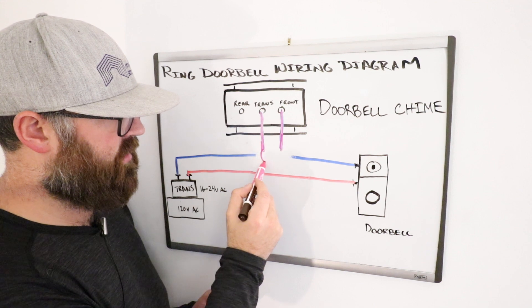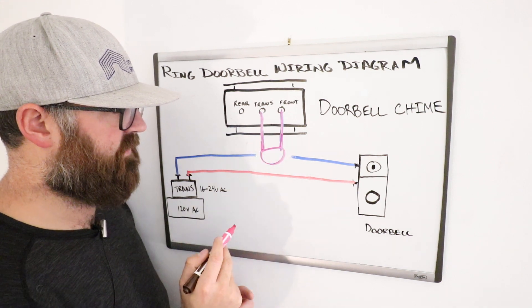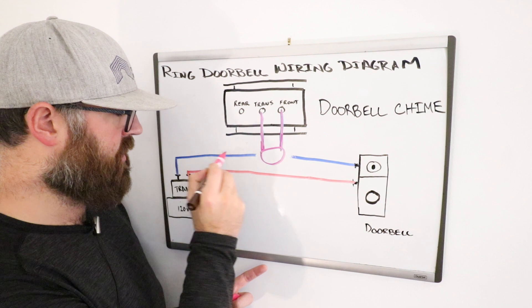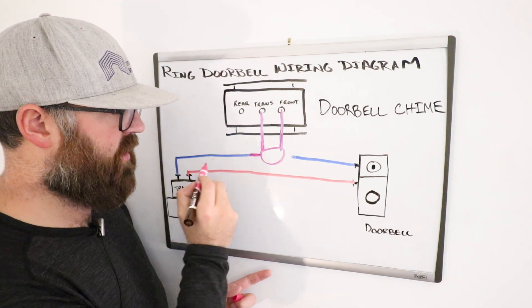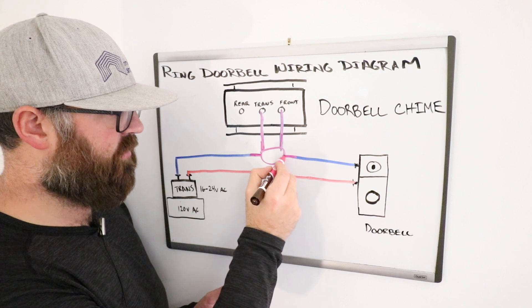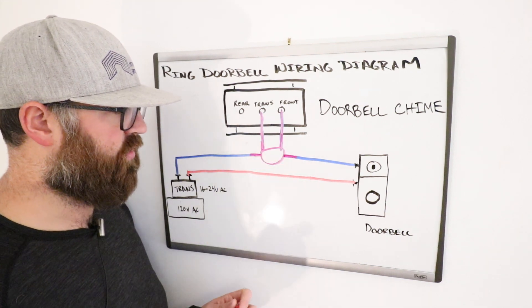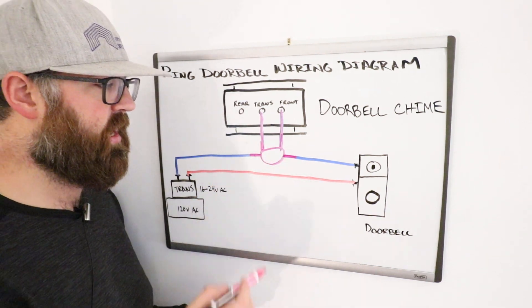And then, I'm just going to represent the device there. You're just going to connect, per the instructions, the transformer wire to the doorbell power adapter and the front doorbell wire to the doorbell power adapter. And that is it. That's all it takes to wire up a ring doorbell.